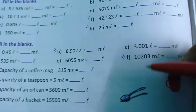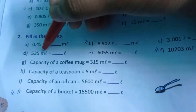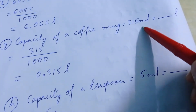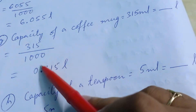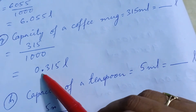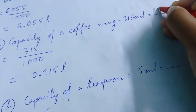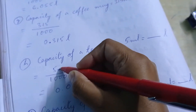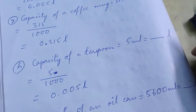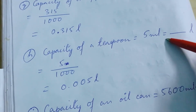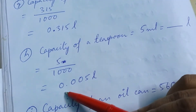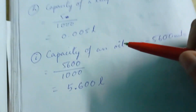Question F is homework — similar to how you did D and E. For question G, the capacity of a coffee mug is given as 315 ml, convert to liter: 315 divided by 1000 gives 0.315 liter. For question H, the capacity of a teaspoon is 5 milliliter — convert to liter: 5 divided by 1000 gives 0.005 liter.